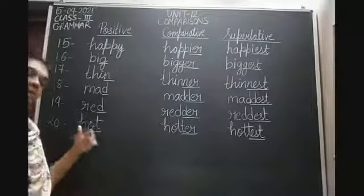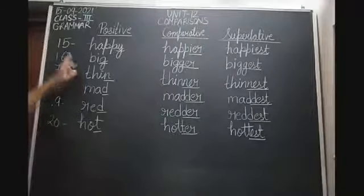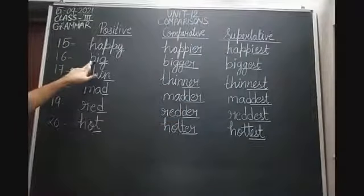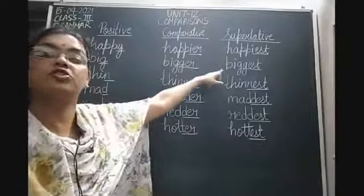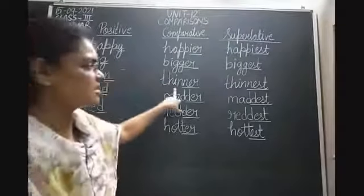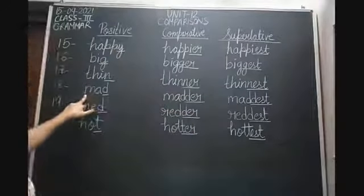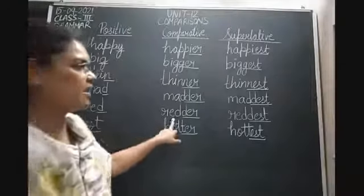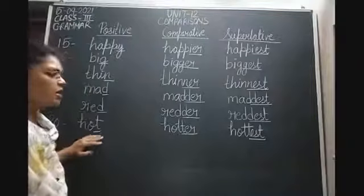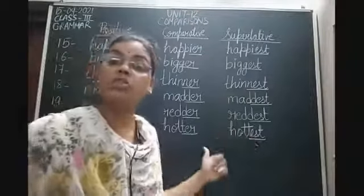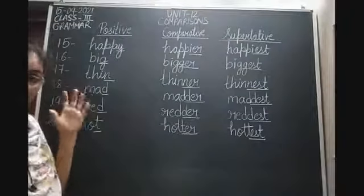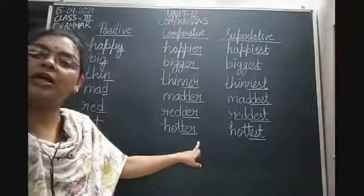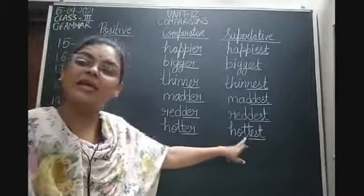Let's revise. The fifteenth positive degree is happy, comparative happier, superlative happiest. Sixteenth is big, comparative bigger, superlative biggest. Then thin — thinner, thinnest. Mad — madder, maddest. Red — redder, reddest. Hot — hotter, hottest. Things to remember: for small-spelling adjectives with a consonant at the end, double the consonant and add ER for comparative, double the consonant and add EST for superlative.